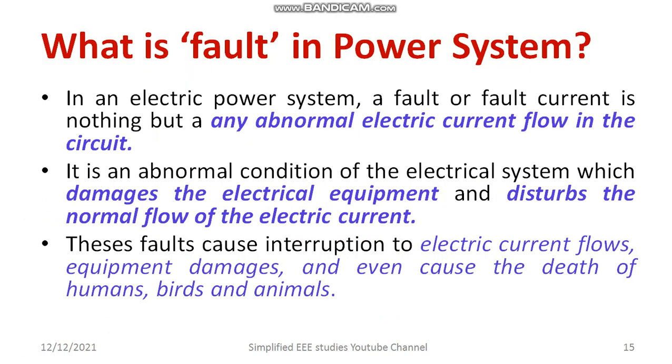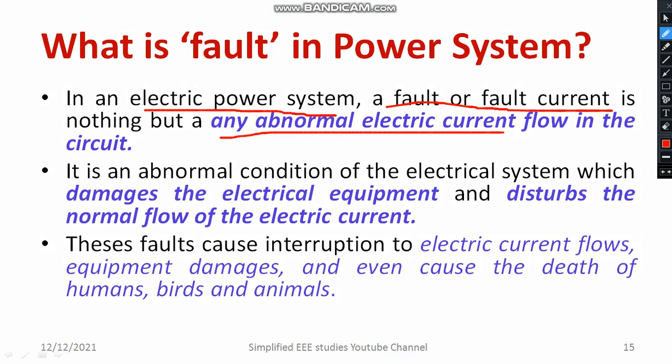Moving on to the definition: in an electric power system, a fault or fault current is any abnormal electric current flowing in the circuit — any excess of current, any unwanted current, or any large amount of current flowing through a particular circuit of the power system. That is known as a fault.